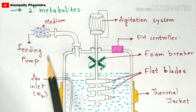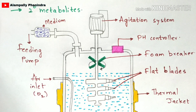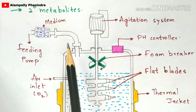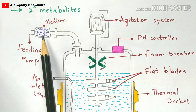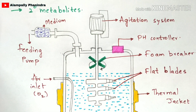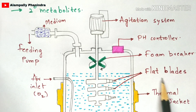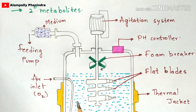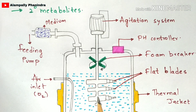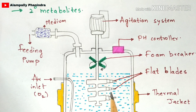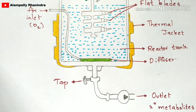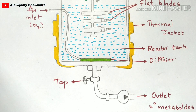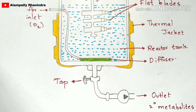The feeding pump is where you feed the primary metabolites — the cell colonies — into the bioreactor. There is a small tank where you place the medium containing the cell colonies, with a small tap. When you open this tap, a small amount of medium transfers into the reactor tank. The flat blades rotate and break down or metabolize the primary metabolites into secondary metabolites. The secondary metabolites are sent out through the outlet and are mainly used for scientific research, researchers, and educational purposes.